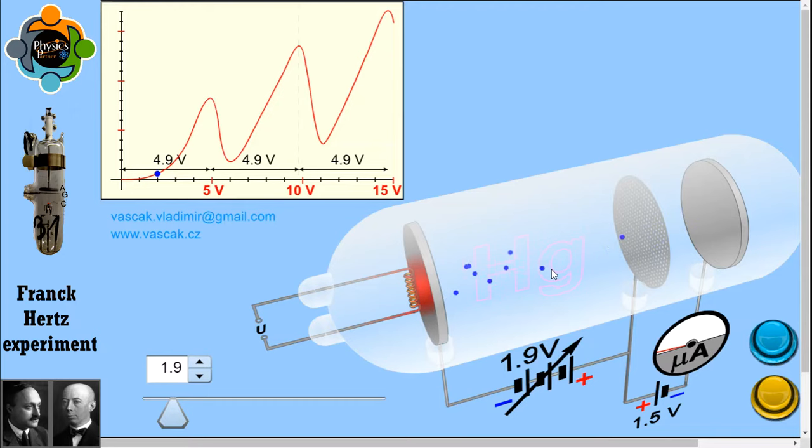The collecting plate is at a lower potential and it's negative with respect to the mesh grid. If electrons have sufficient energy on reaching the grid, some will pass through the grid and reach the collecting plate, and it will be measured as current by the ammeter. You can see here a sensitive ammeter is attached which can measure the current.